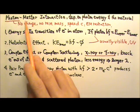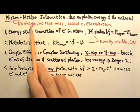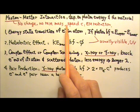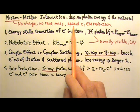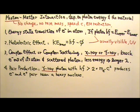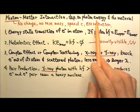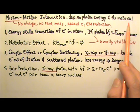Let's review the interactions of photons with matter. Photons are electromagnetic radiation with no electric charge and no rest mass, and they always travel at the speed of light C in vacuum. Because photons are electrically neutral, they do not interact with electrons and nuclei through coulombic electric force. Therefore, a photon's interaction with material is not gradual, but is characterized by the sudden disappearance of the photon, or by scattering through significant angles with significant energy loss. The type of photon interaction depends on the energy of the photon and the material it interacts with.